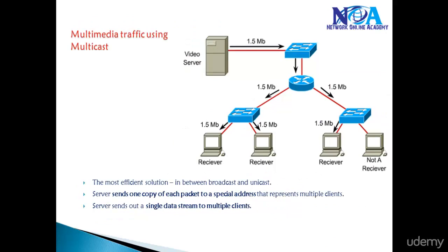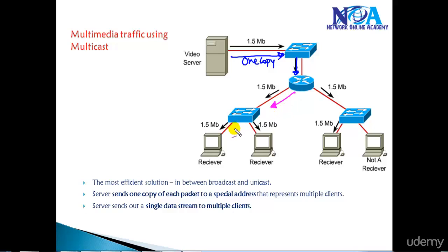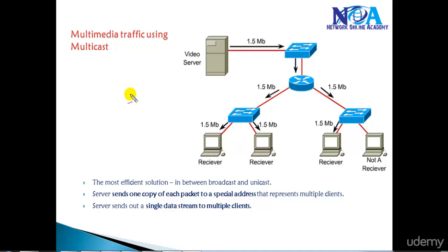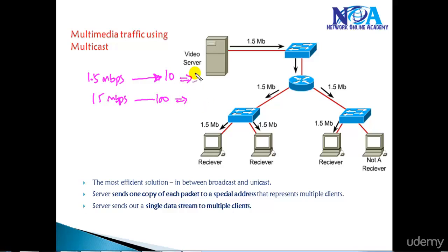Instead, we use multicast. The server sends only one copy of the information. Depending on the number of receivers, the router makes multiple copies. For example, if there are two receivers in a LAN, the router makes two copies — one sent here and one sent on the other side. Even if the number of users grows from 10 to hundreds, it does not increase bandwidth utilization because we are still sending only one copy.